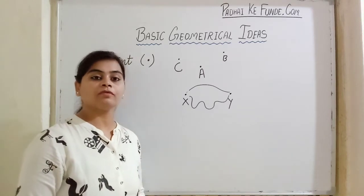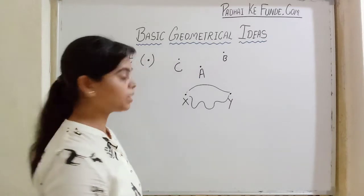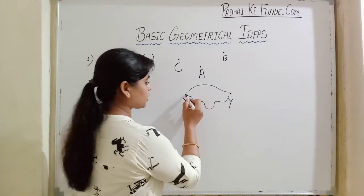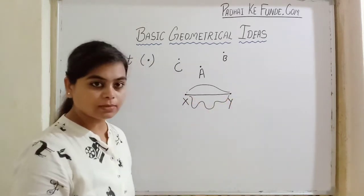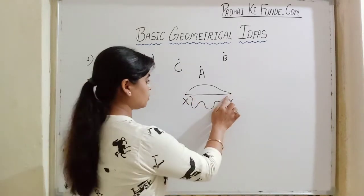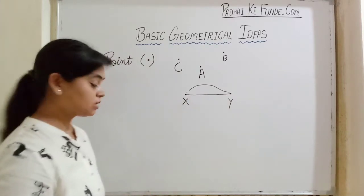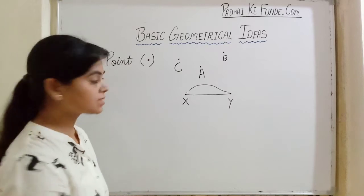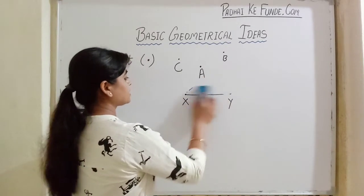But if we want to join these two points in the shortest distance as much as we can, then the shortest distance will be this, when we join them straight. So when we join two points straight, so that they cover the shortest distance, then this is called a line segment.